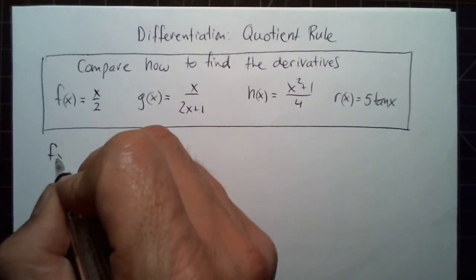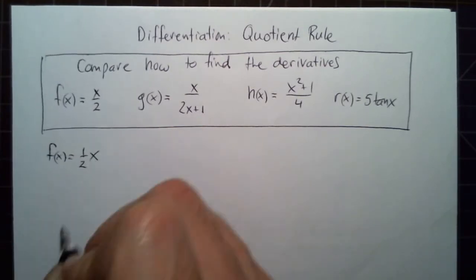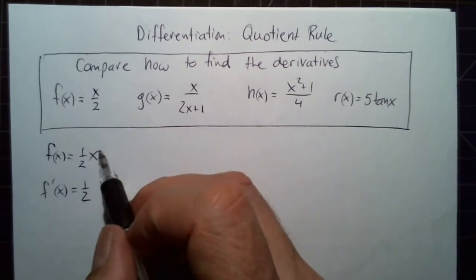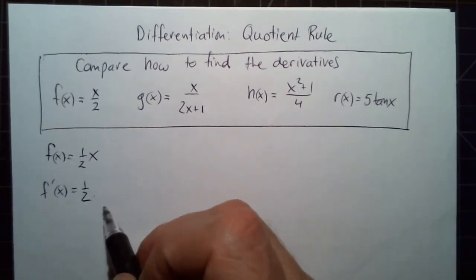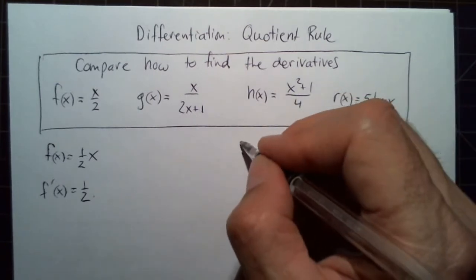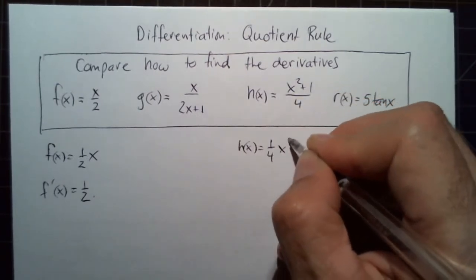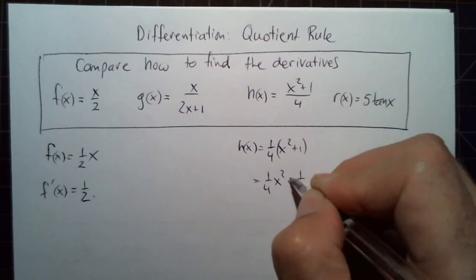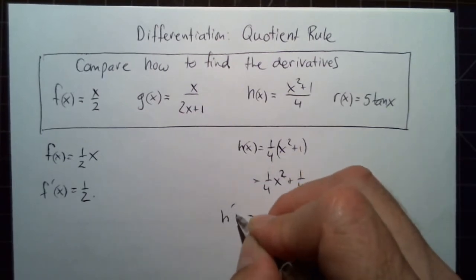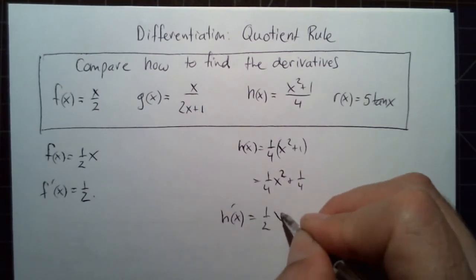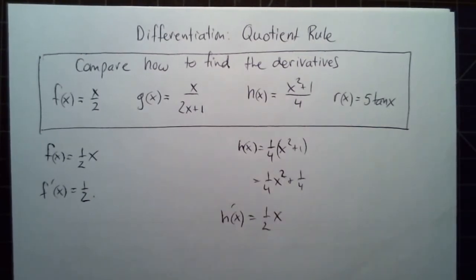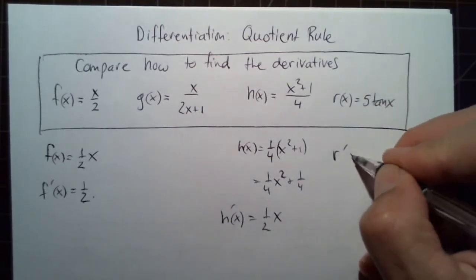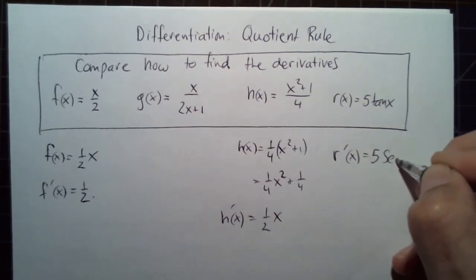Some of these functions can be rewritten and differentiated with the power rule. We just multiply by the exponent and reduce it by one. For example, one-fourth x squared plus one gives a derivative of one-half x. And we know that for five tangent x, the five stays and tangent differentiates to secant squared.